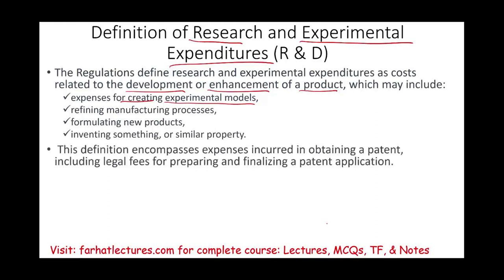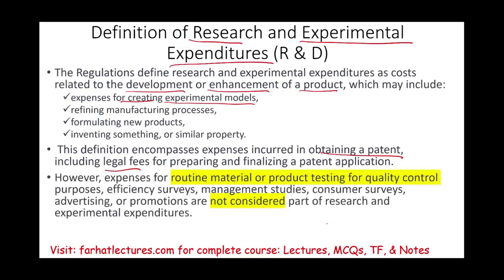This definition also encompasses expenses incurred in obtaining a patent, including legal fees for preparing and finalizing a patent application. However, expenses that are not considered part of research and experiment include routine material or product testing for quality control — quality control means the product is already out there — efficiency surveys, management studies, consumer surveys, and advertising or promotion.